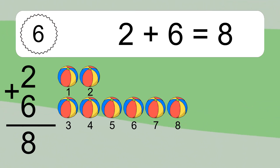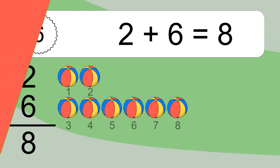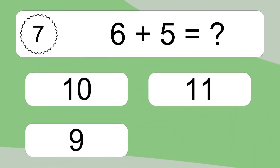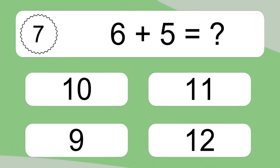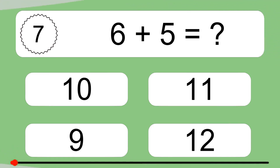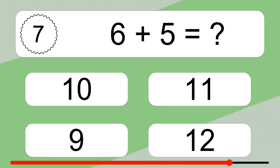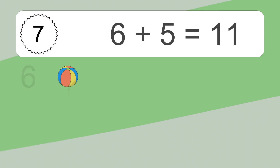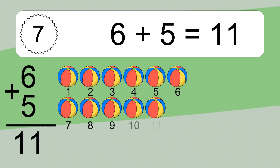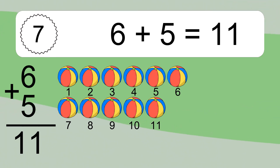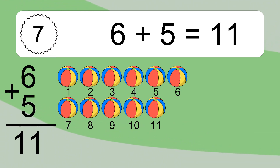Six plus five equals what? Six plus five equals eleven. Let's count it: one, two, three, four, five, six, seven, eight, nine, ten, eleven.